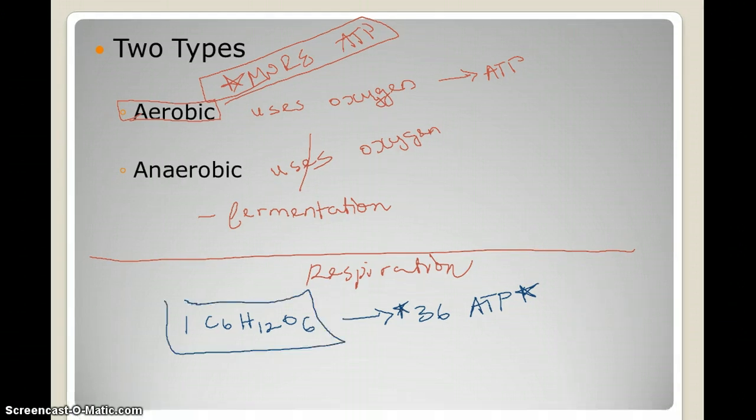there is something we also need to understand: 36 ATP is the net gain. What net gain means is that after all the debts are cleared—meaning after whatever ATP needs